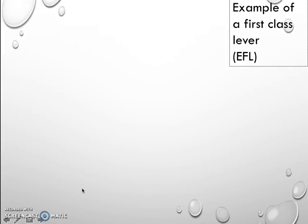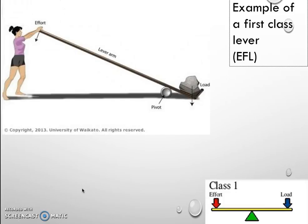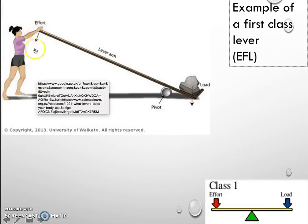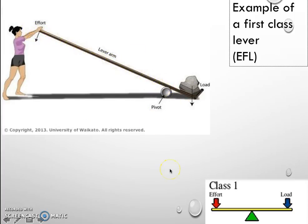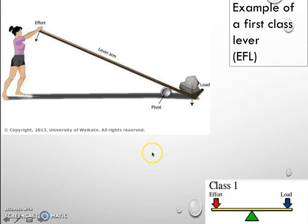So for the effort, fulcrum and load — the effort arm is the distance from the effort to the fulcrum. And no surprise then, the distance from the load to the fulcrum, between those two components, is the load arm.